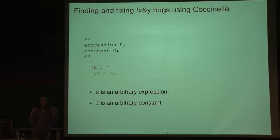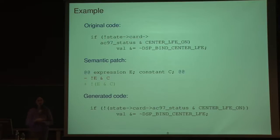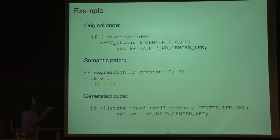Unlike a normal patch, it doesn't have to appear on a specific line. Here's a particularly pathological example where someone put a newline after the arrow, so the exclamation point, the Boolean negation, and the AND are on different lines. If you just did a grep trying to find all lines with exclamation point and AND, you wouldn't find this particular case. Our semantic patch matches: E matches this expression, C matches this expression, and it recreates the term according to the rule, giving the corrected output.